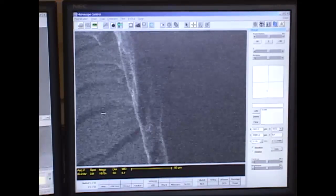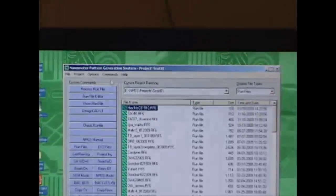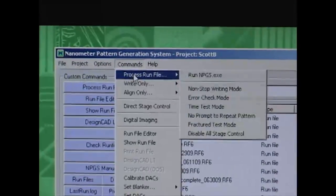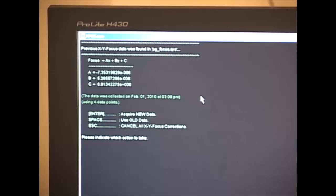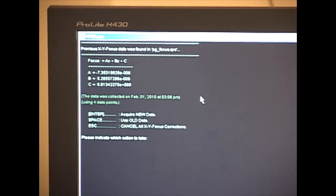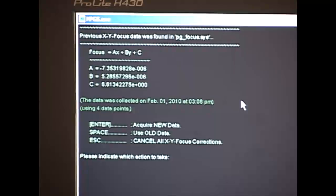And when it's finished it will give me an error value to tell me how non-flat the chip is. In the NPGS program I go to commands and direct stage control. And NPGS is going to prompt me to record the four different corners of the chip so that it can calculate the plane.